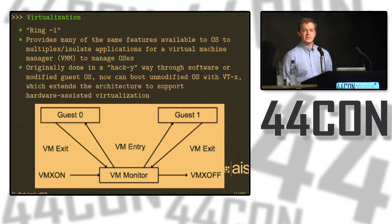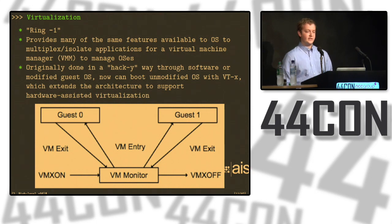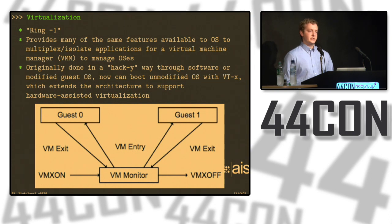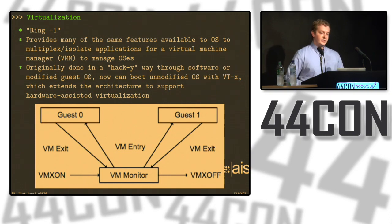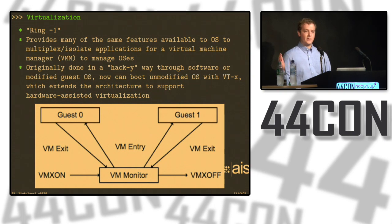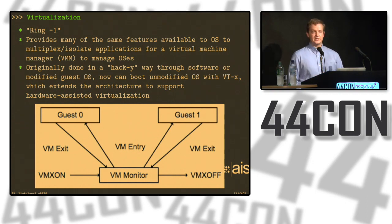Virtualization is one of the unofficial rings — often called ring minus one, though Intel hasn't officially declared it that. It provides a lot of the same features the OS has to manage applications, but for a more privileged virtual machine manager (VMM) or hypervisor to manage operating systems. The VMM and VTX extensions are actually much cleaner than what the OS has. Interestingly, early virtualization was done in a hacky way — putting the OS in ring one, which is usually never used, and trapping on sensitive operations to do the OS's job for it.